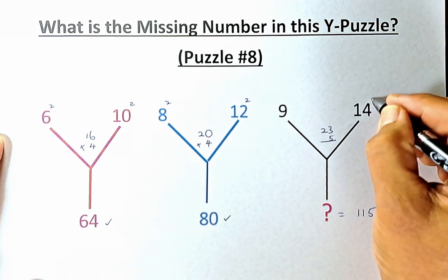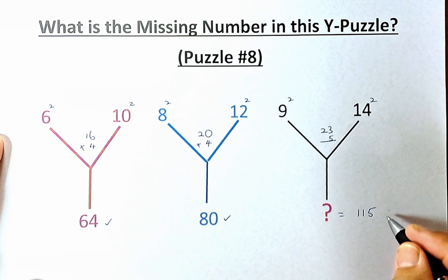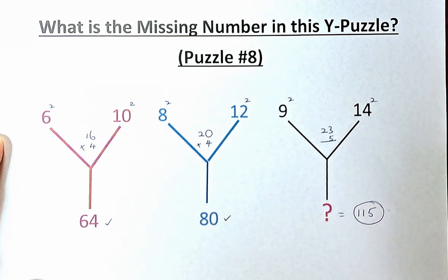Similarly, if you take 14 squared minus 9 squared, 14 squared is 196 minus 81. That will give us 115. So the question mark is equal to 115.